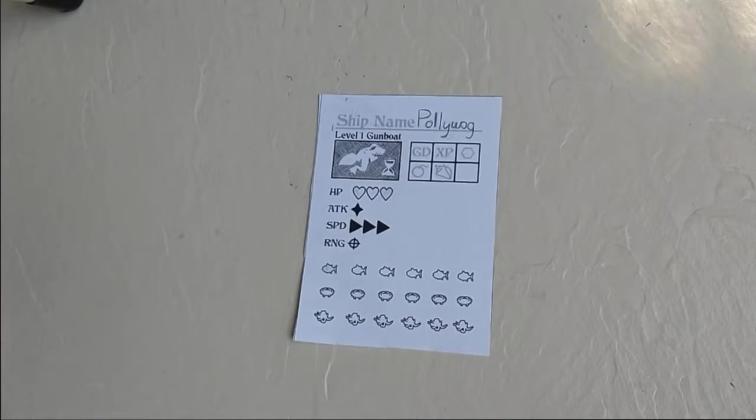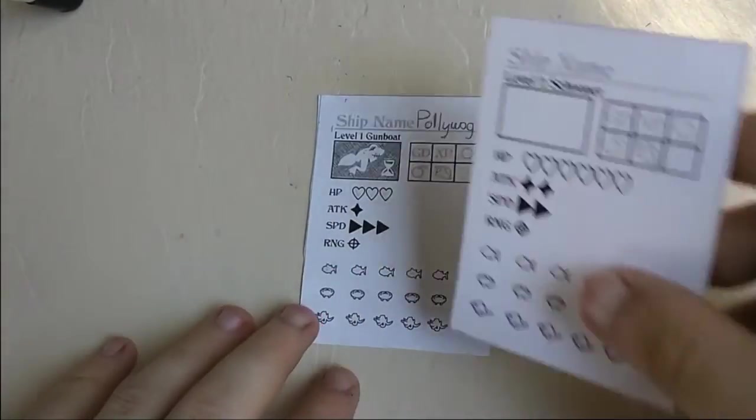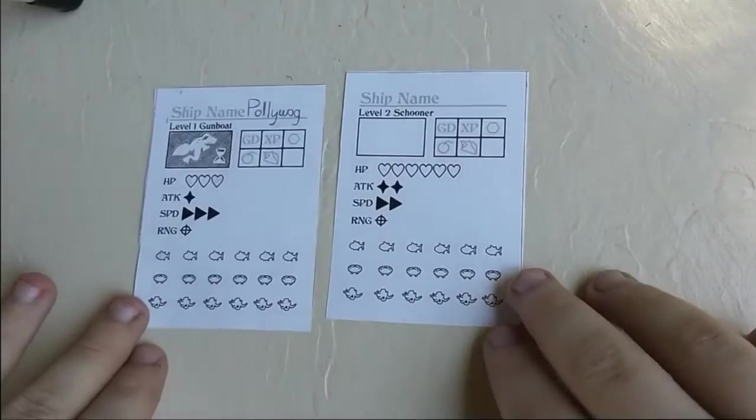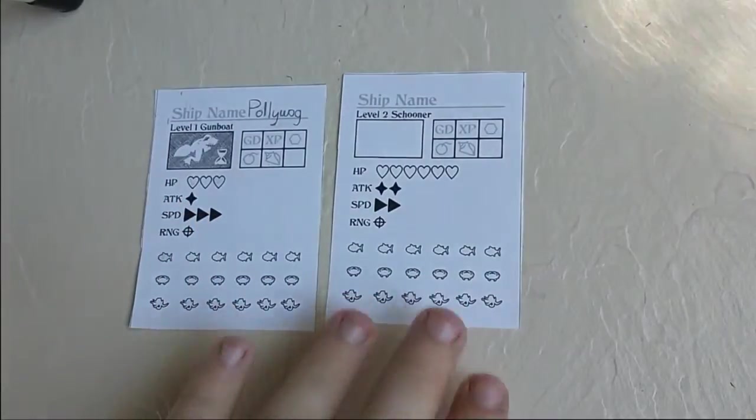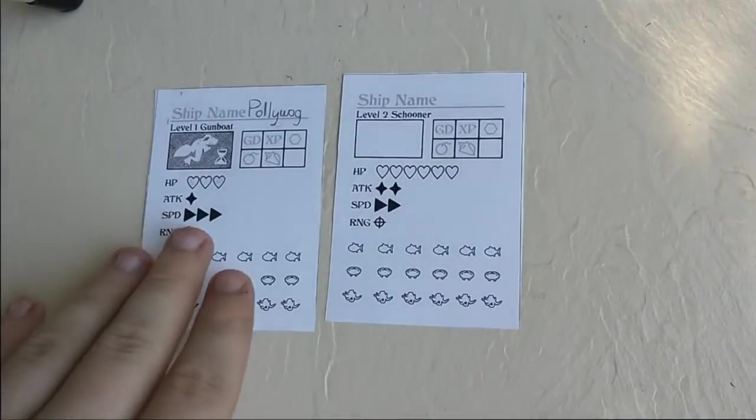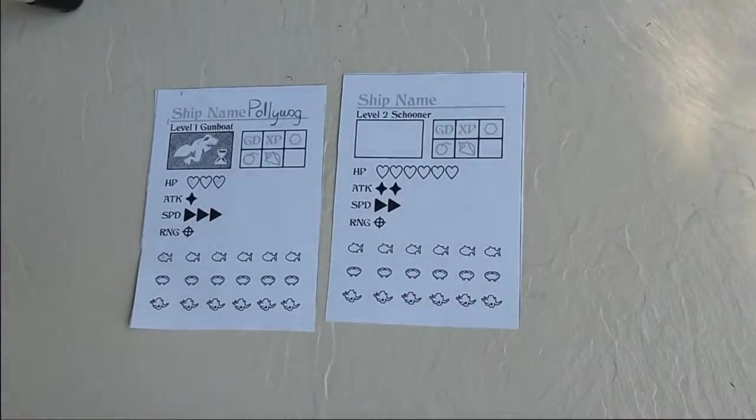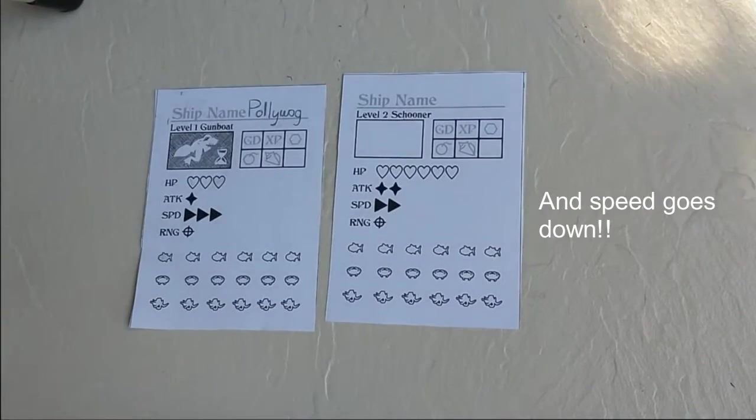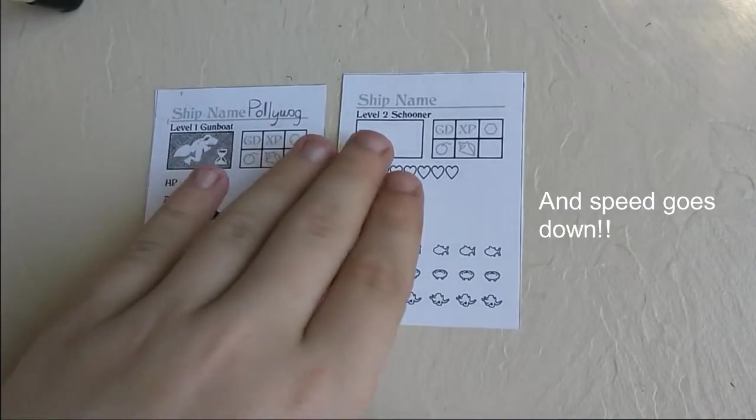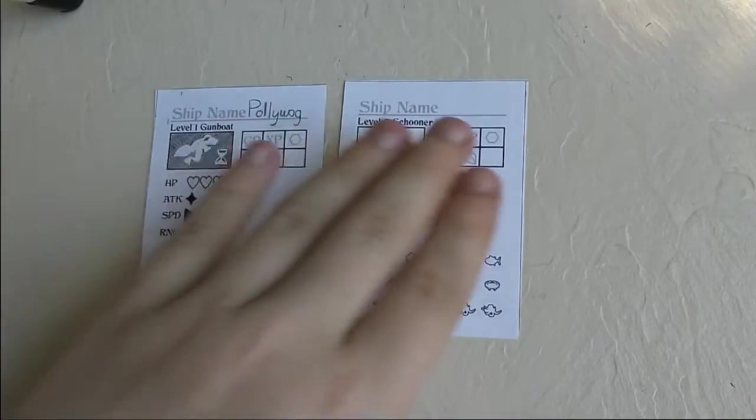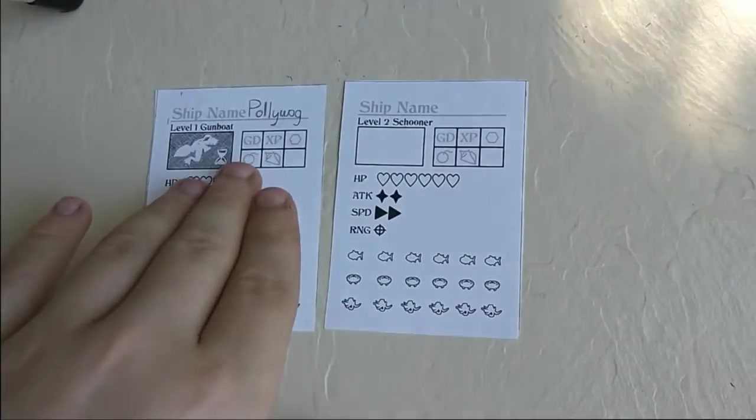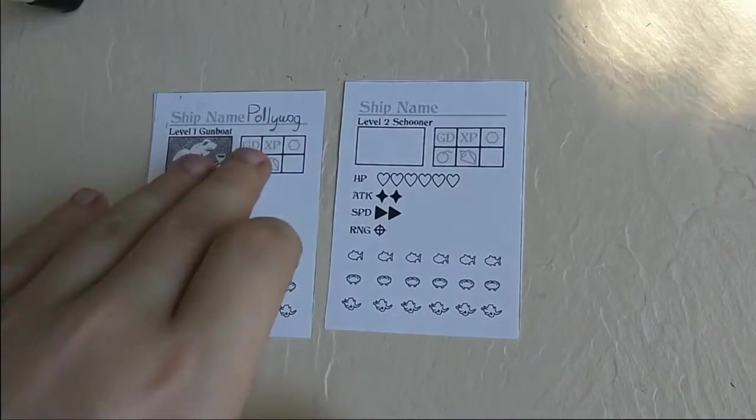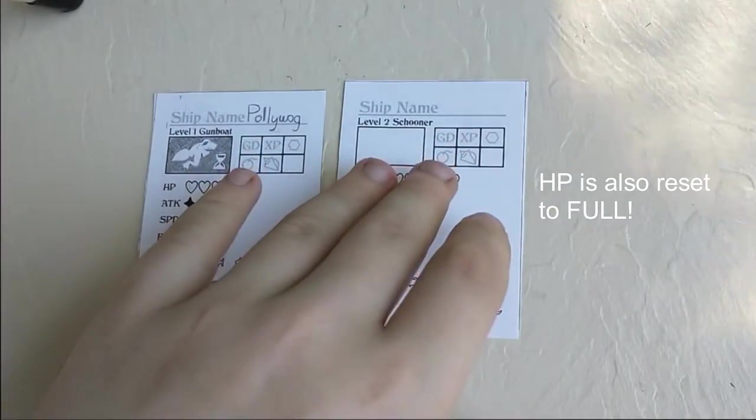When you level up, you transfer all this information onto your new ship card. So we have a level 1 gunboat, and then it would turn into a level 2 schooner. And you can see that the HP goes up, the attack goes up, but everything else stays the same. So you get to transfer over the flag, the ship name, all your gold, ammunition, bombs, and conch shells, and fish. But not the XP, because your XP gets reset.